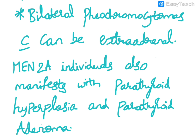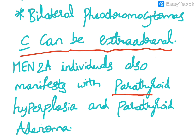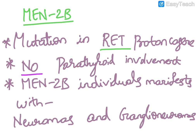MEN2a individuals also manifest with bilateral pheochromocytomas, which can sometimes be extra-adrenal. Additionally, there is involvement of the parathyroid gland resulting in parathyroid hyperplasia and sometimes parathyroid adenoma.